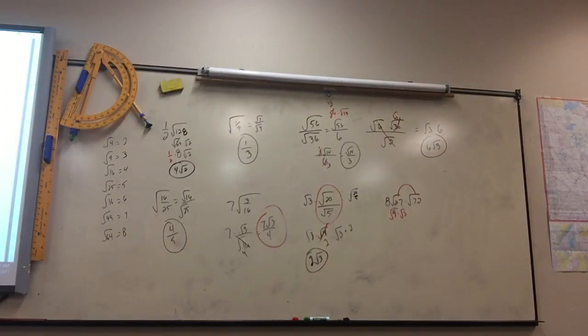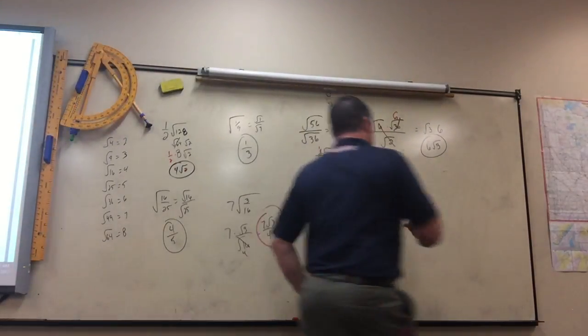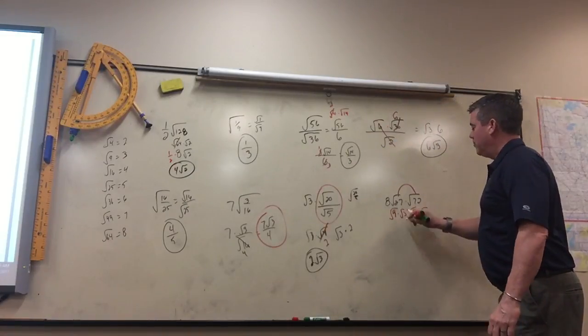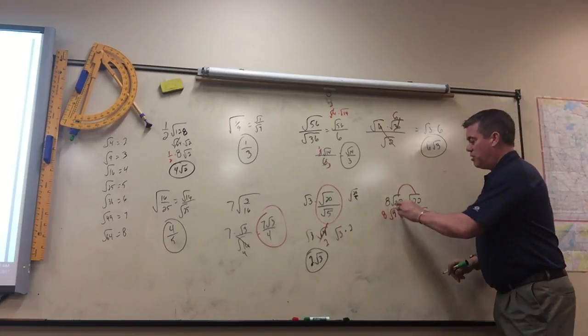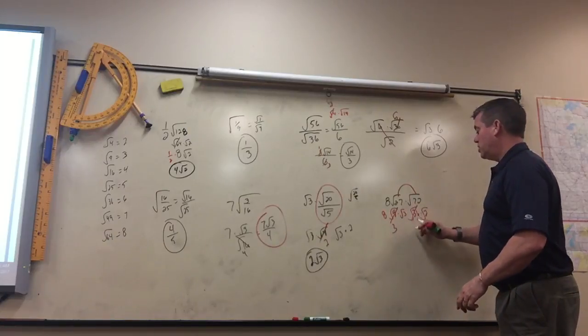36. 36, yeah. 36 times 2. And then don't forget, there's still an 8 out in front. So this would turn to 3. This would turn to 6.